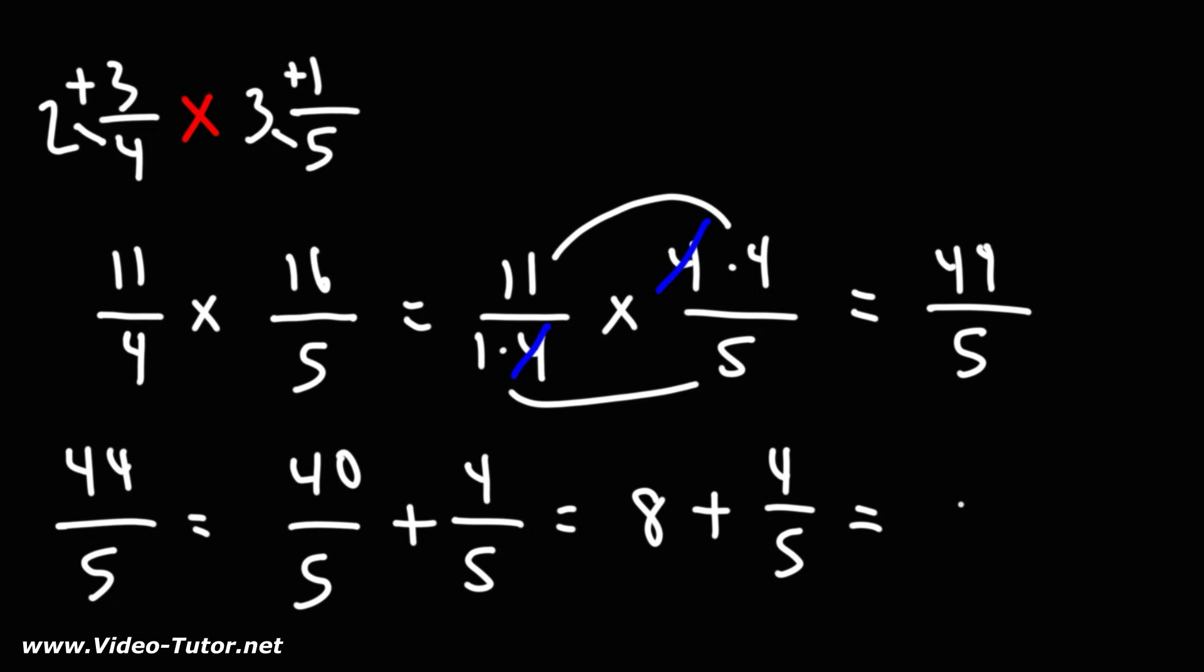And so we can write that as our final answer, 8 and 4 fifths. So 2 and 3 fourths times 3 and 1 fifths is equal to 8 and 4 fifths as a mixed number. So that's how you could multiply two mixed numbers together.